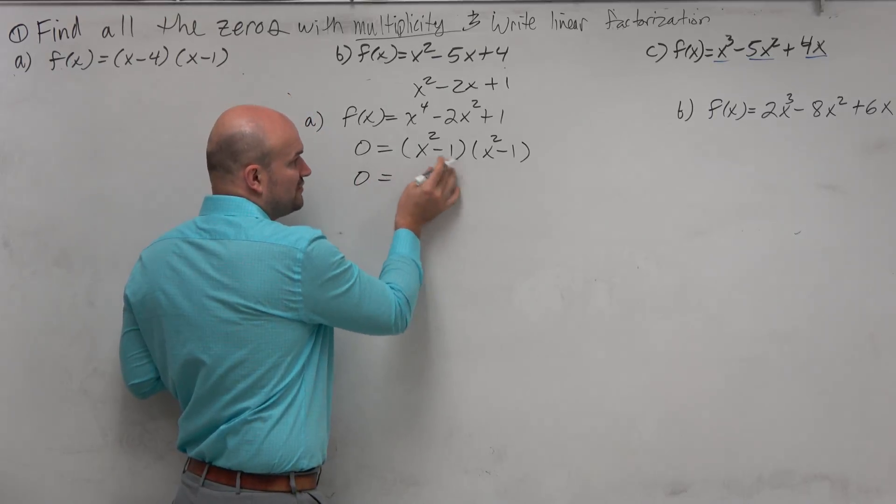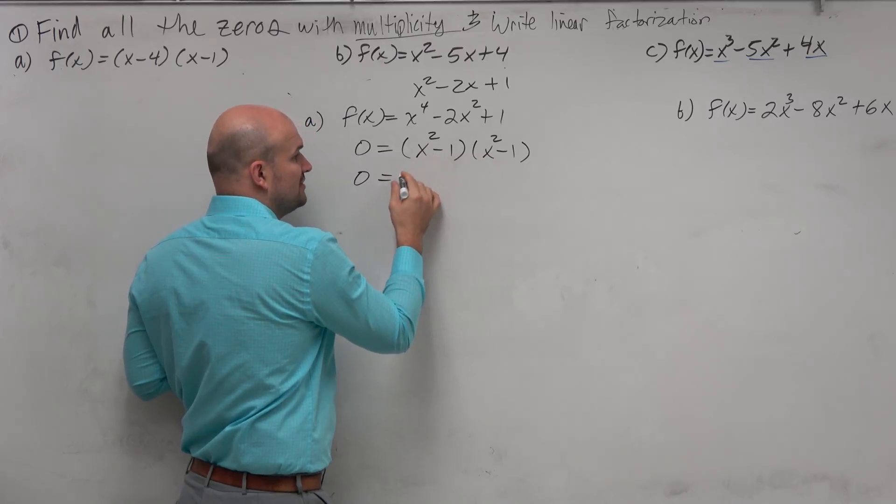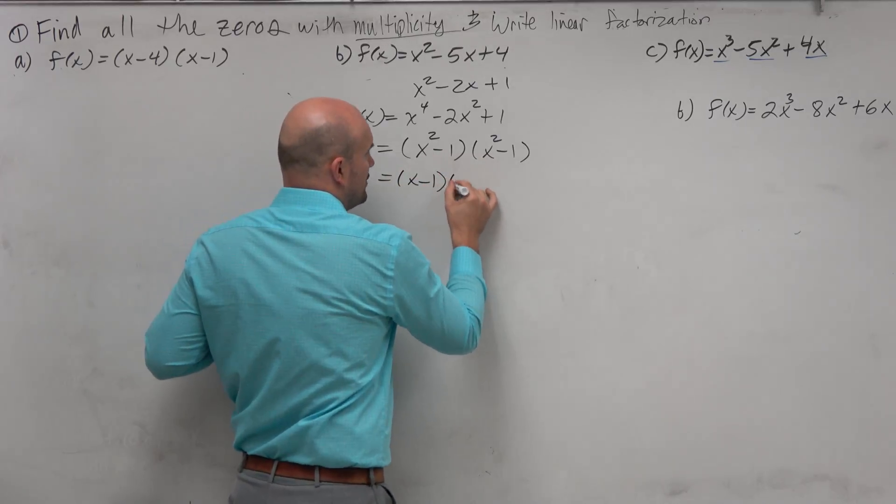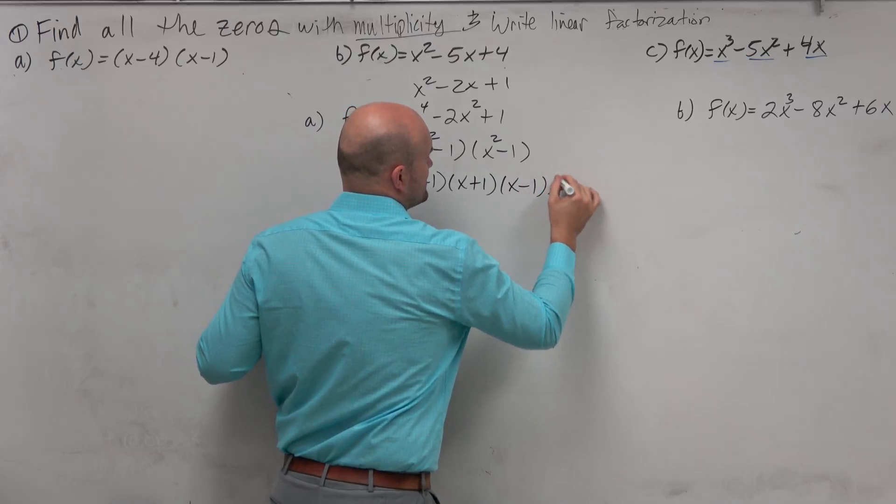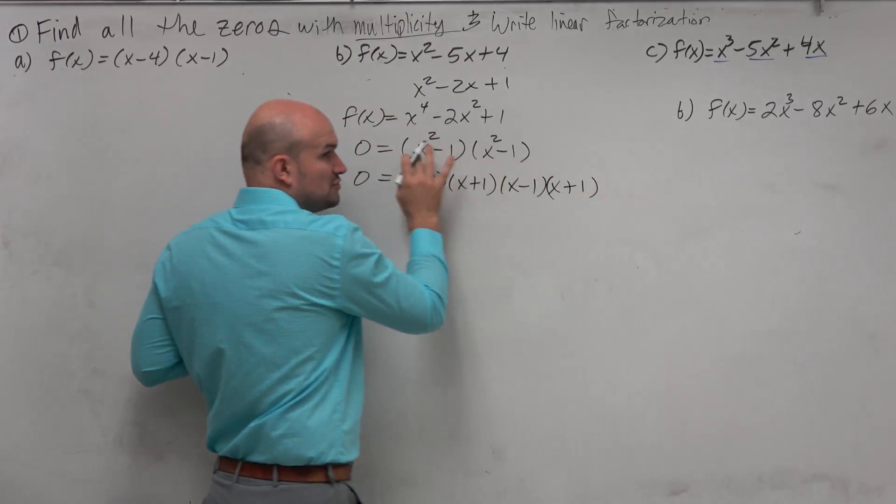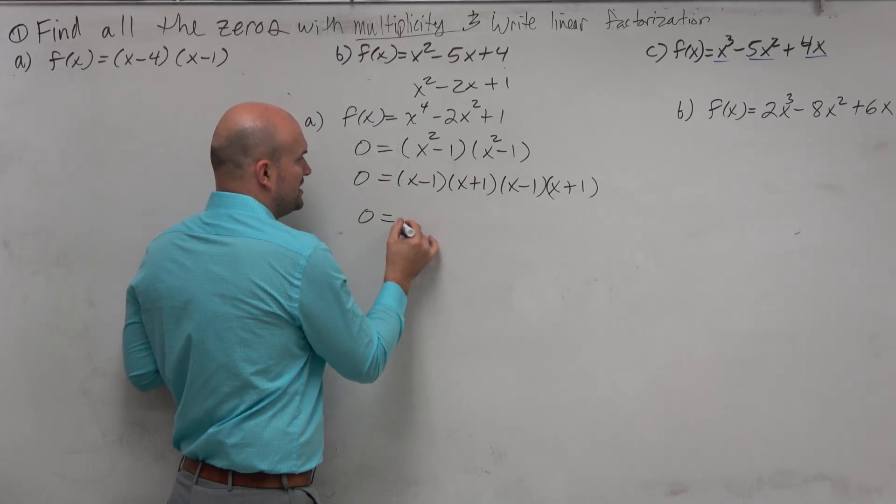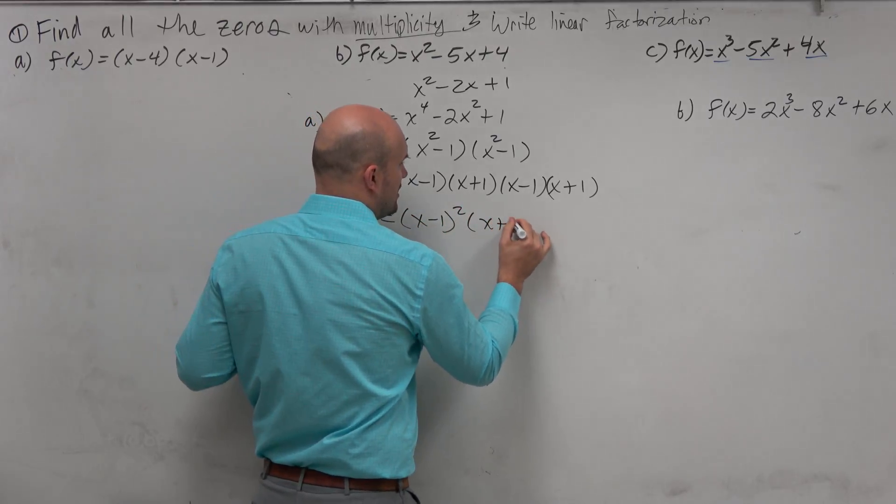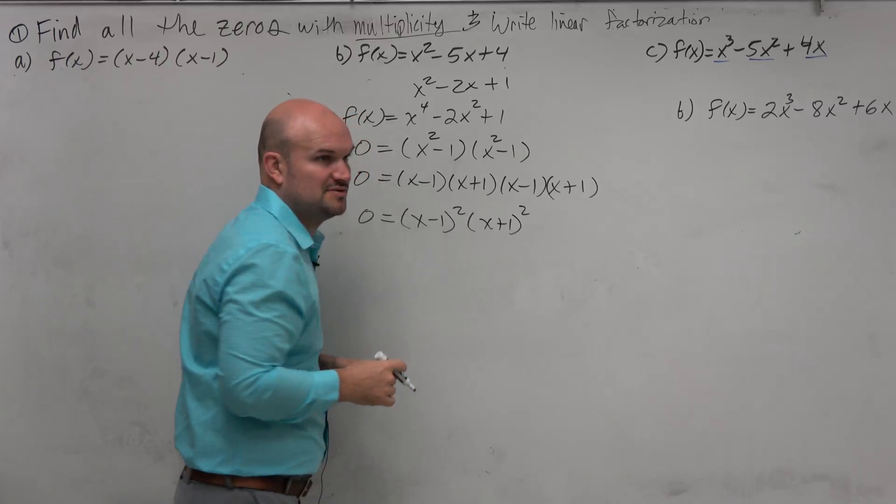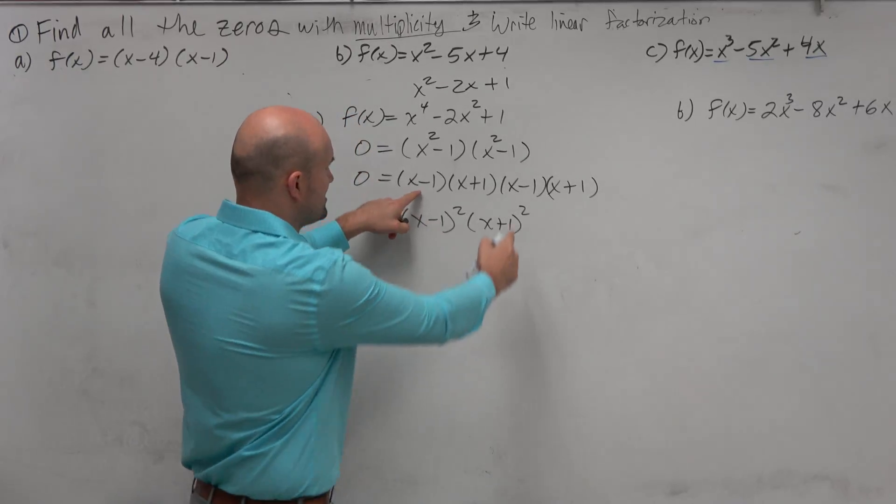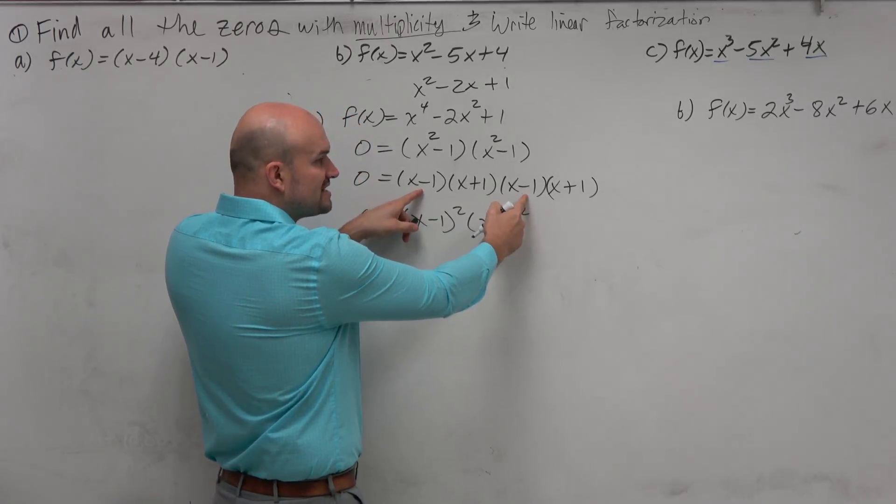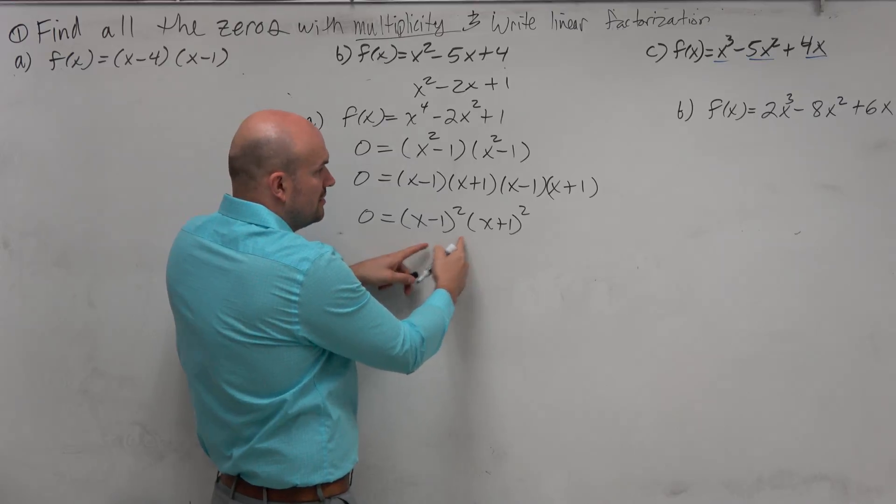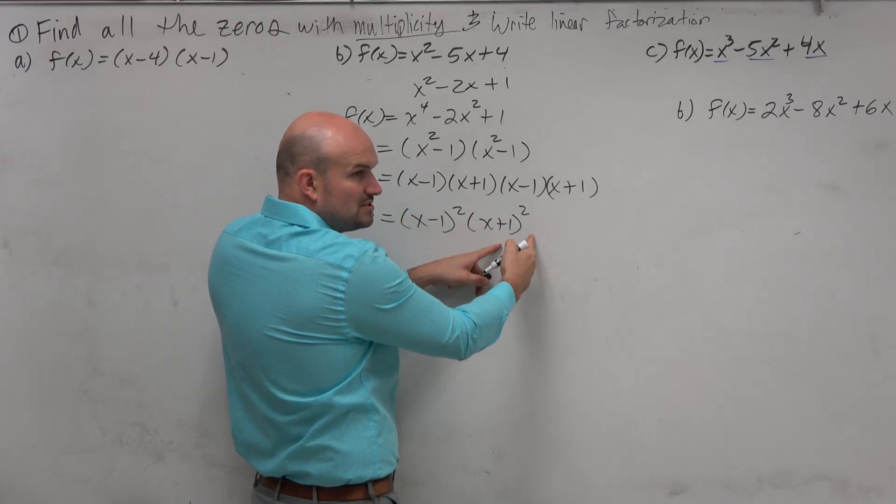If I was to continually factor this as a product of linear factors, I would get x minus 1 times x plus 1 times x minus 1 times x plus 1. Difference of two squares for both of those. And what I want you guys to see is, does that now produce a repetition of the factors x plus 1 and x minus 1? I have two x minus 1's. x minus 1 times x minus 1 is x minus 1 squared. x plus 1 times x plus 1 is x plus 1 squared.